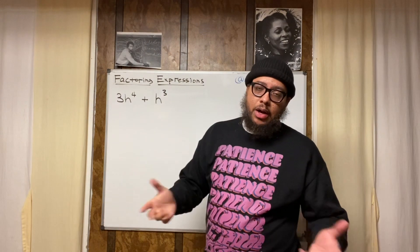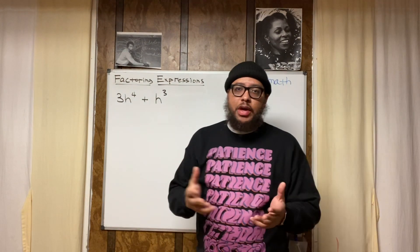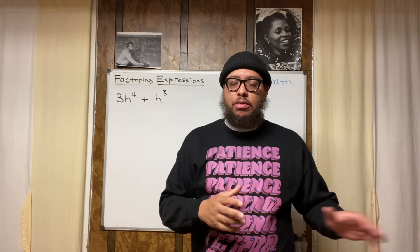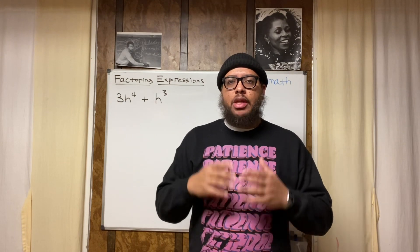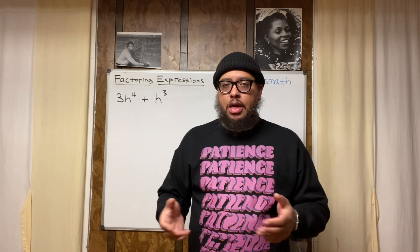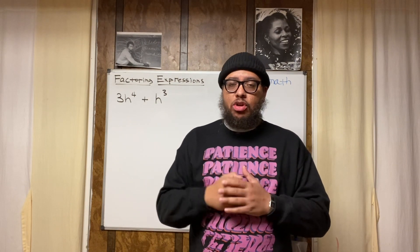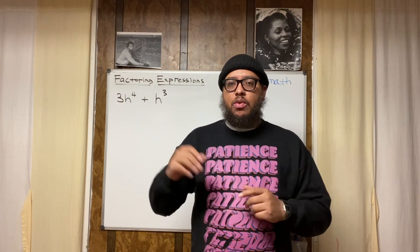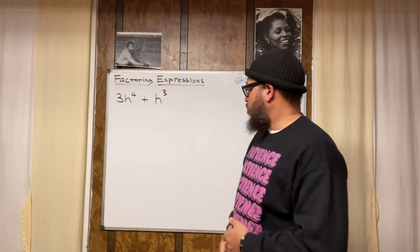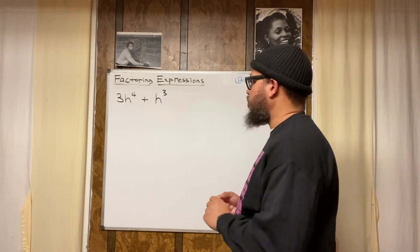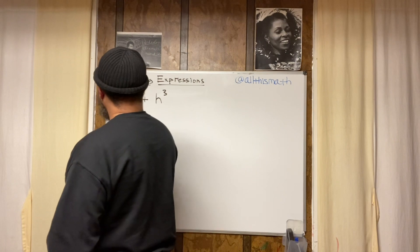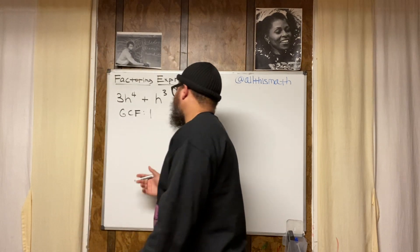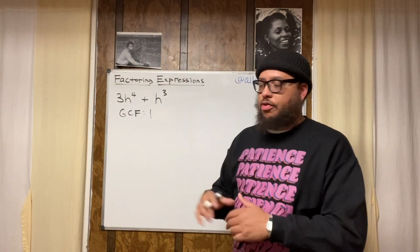So you look at the three and the one and say: out of three and one, what's my greatest common factor? Three is a prime number. One is neither prime nor composite. So if your two numbers are three and one, your greatest common factor would be one, because one is the greatest number that is a factor of both. One is a factor of one and one is a factor of three. So for your GCF, you want to write down one — though you don't have to write the one, but for all purposes we'll put it for right now.